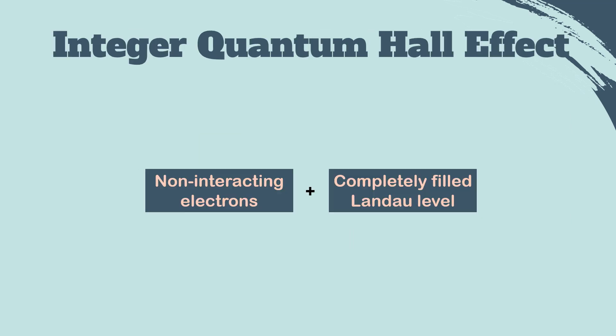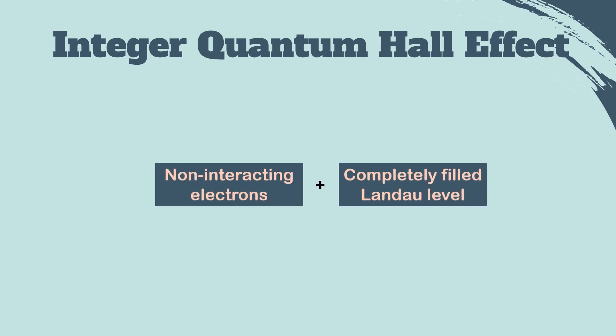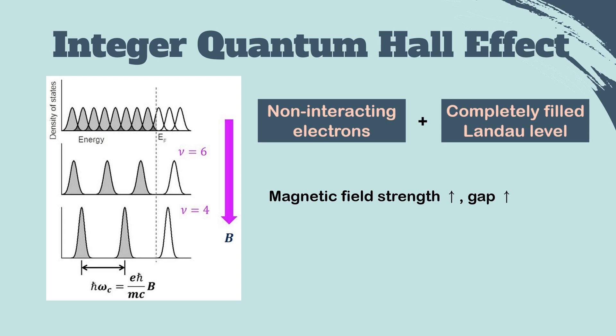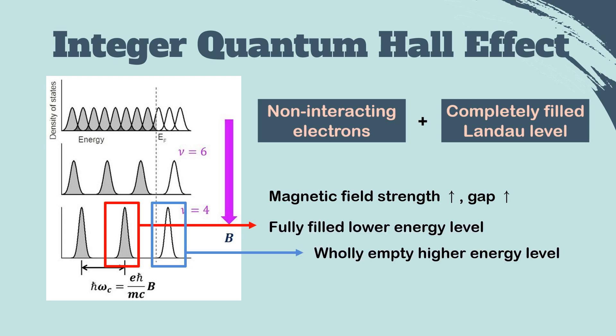First, the integer quantum Hall effect is described in a system of non-interacting electrons where the highest Landau level is completely filled. As the magnetic field strength increases, the gap between Landau levels becomes wider. When the Fermi level is placed in the middle of the gap between Landau levels, the energetically lower Landau level is completely filled with electrons, whereas the energetically higher Landau level is wholly empty.